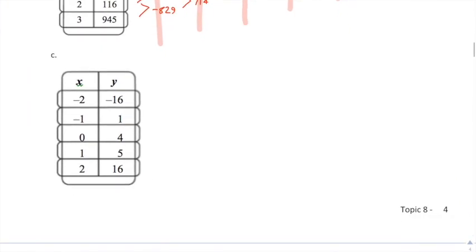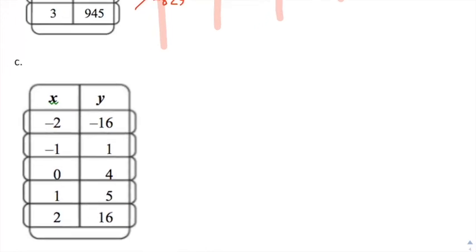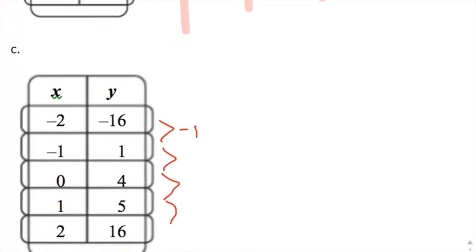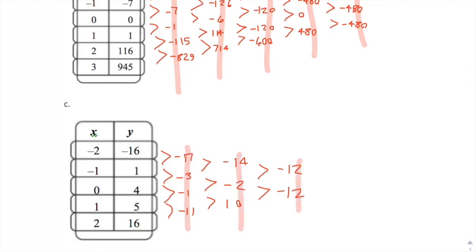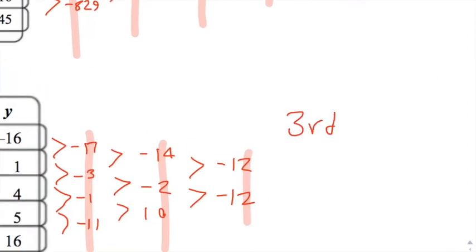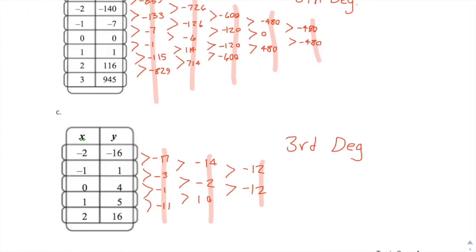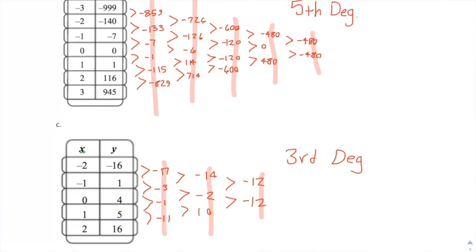Last one — same idea, differences of differences, a bit more manageable. Negative 16 minus 1 is negative 17; 1 minus 4 is negative 3; 1 minus 5 is negative 4 — wait, 4 minus 5 is negative 1; 5 minus 16 is negative 11. Next set of differences: negative 14, negative 2, positive 10. Last set: negative 12 and negative 12. Count the levels — 1, 2, 3 — so this is a third degree polynomial. And that's it for the 8.1 lesson.